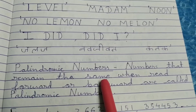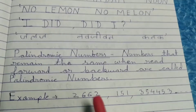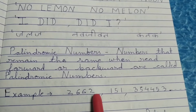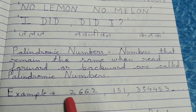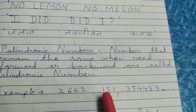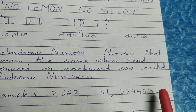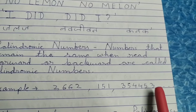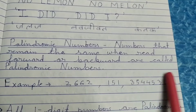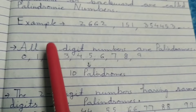Numbers that remain the same when read forward or backward are called palindromic numbers. For example, 2662 — if you read it backward, it is again 2662. Similarly, 151 read backwards is also 151, and 3,54,453 read backward is also 3,54,453. Such numbers are called palindromic numbers.